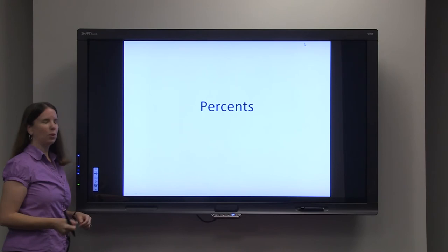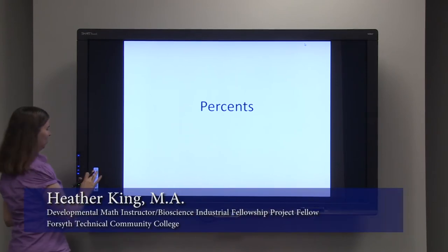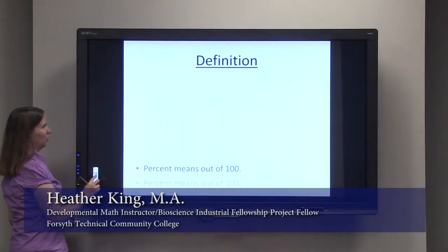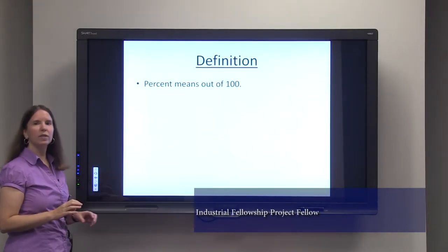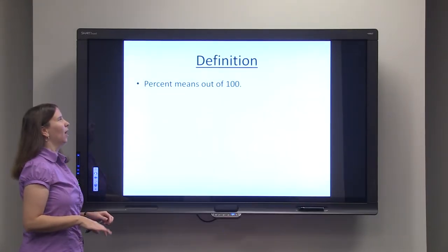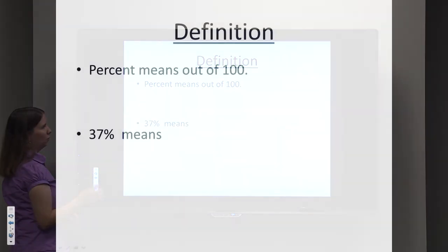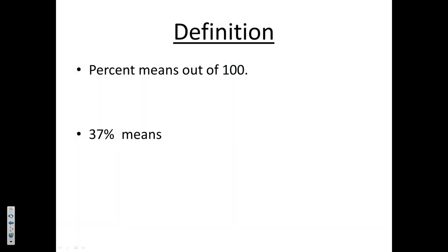The topic is percents. A percent simply means out of 100. So for example, 37% means 37 over 100 — that simple.